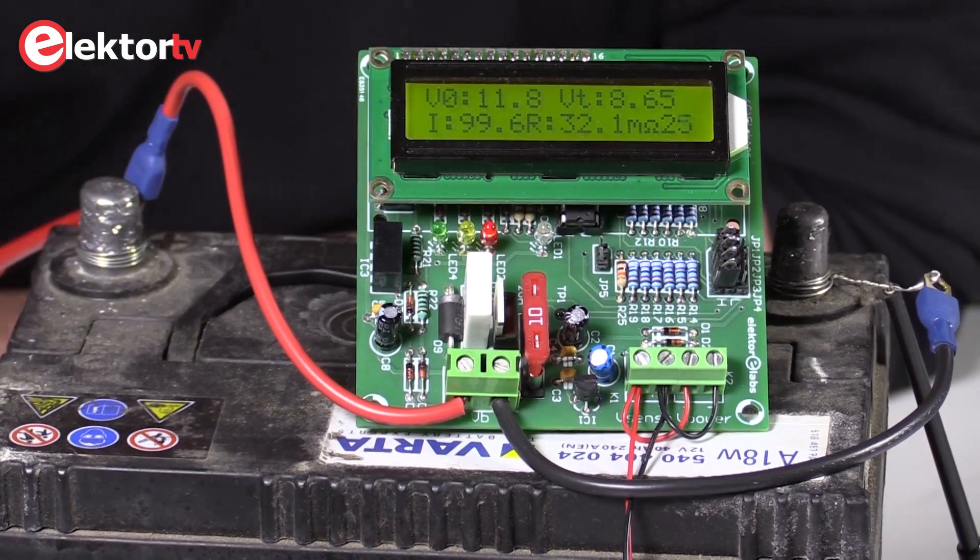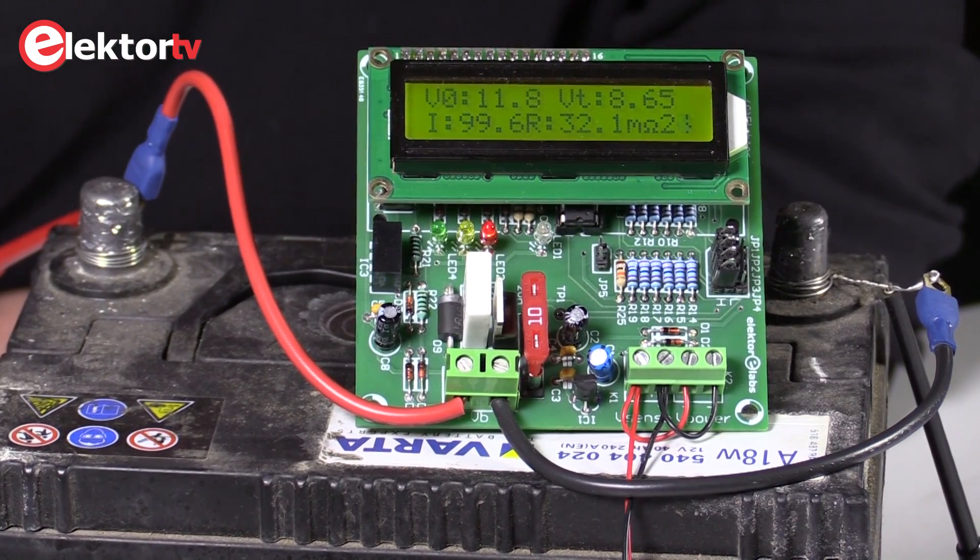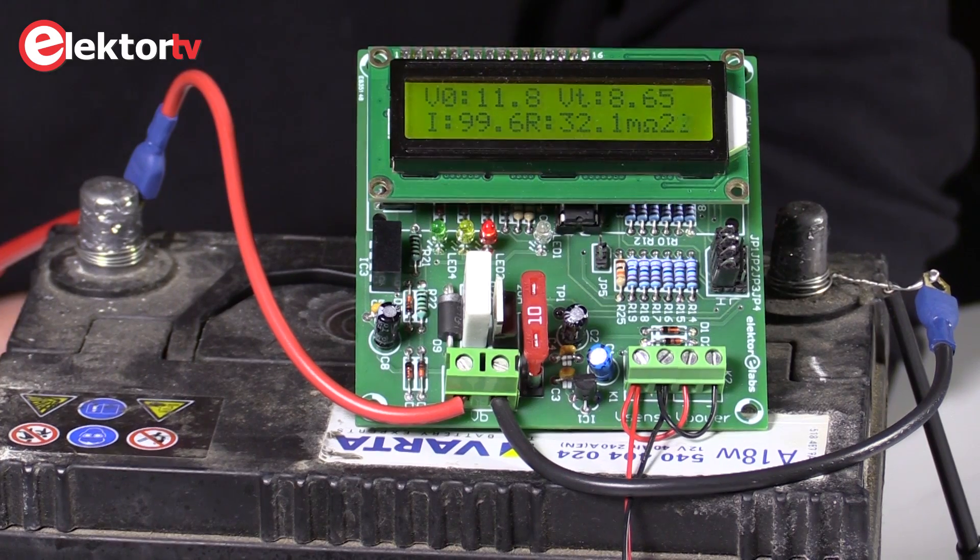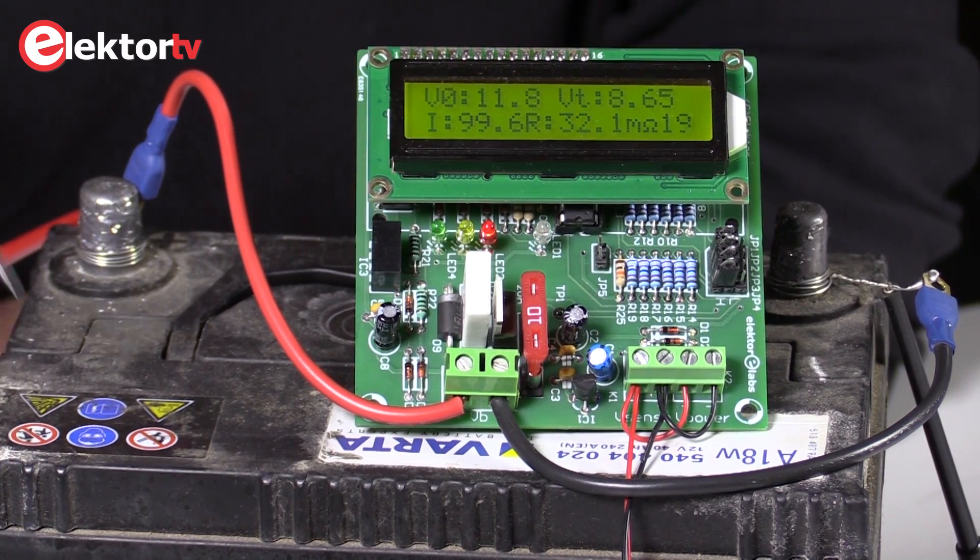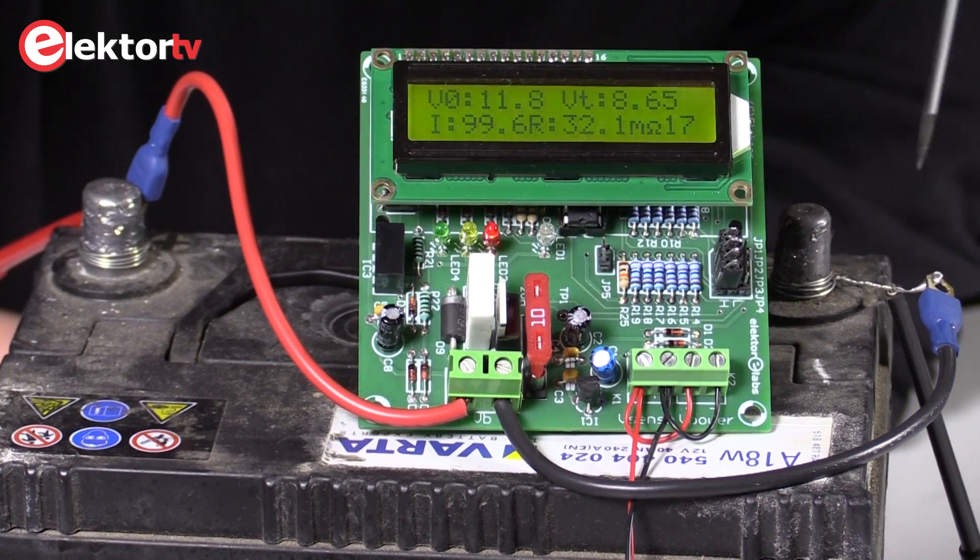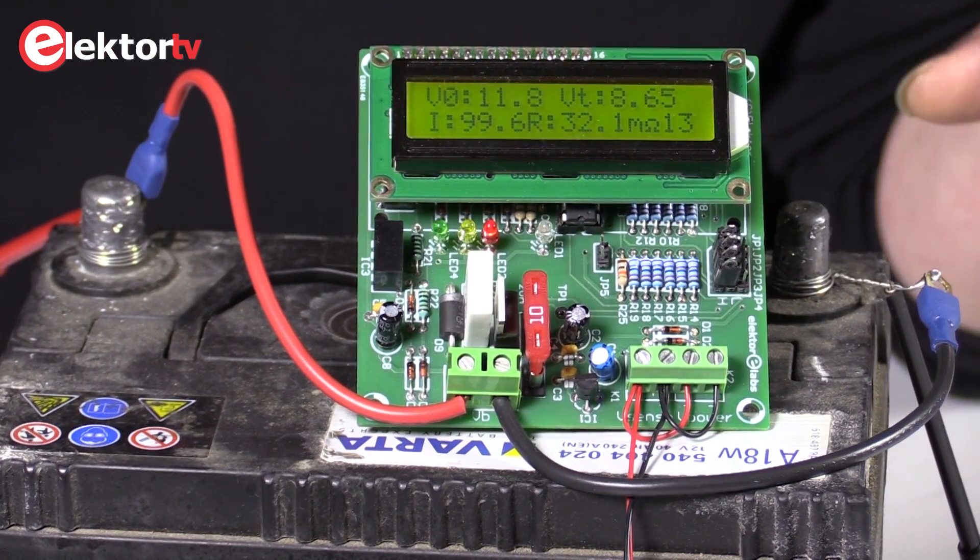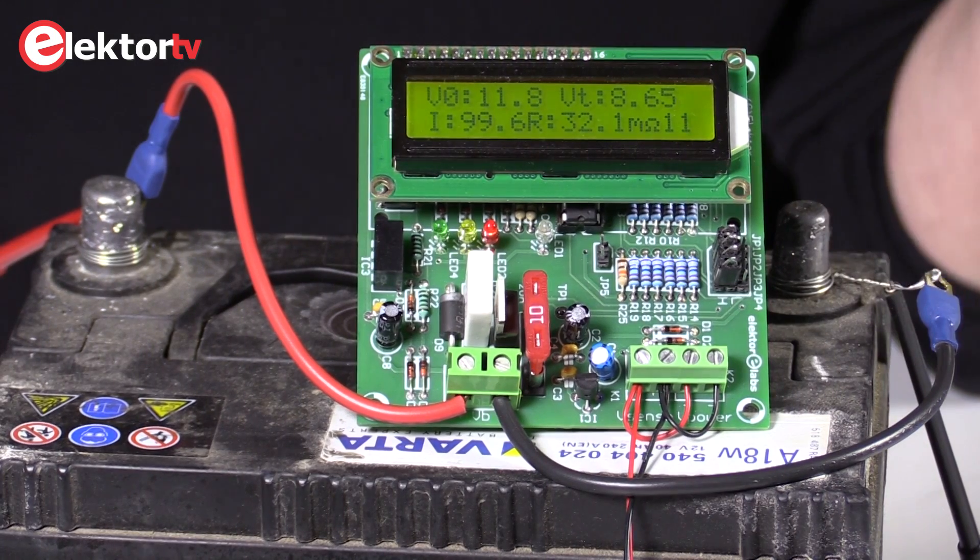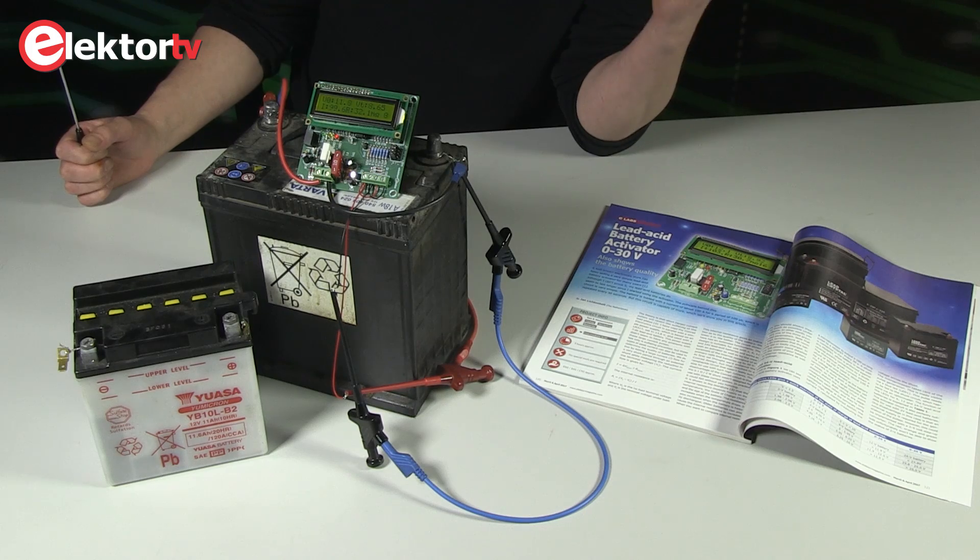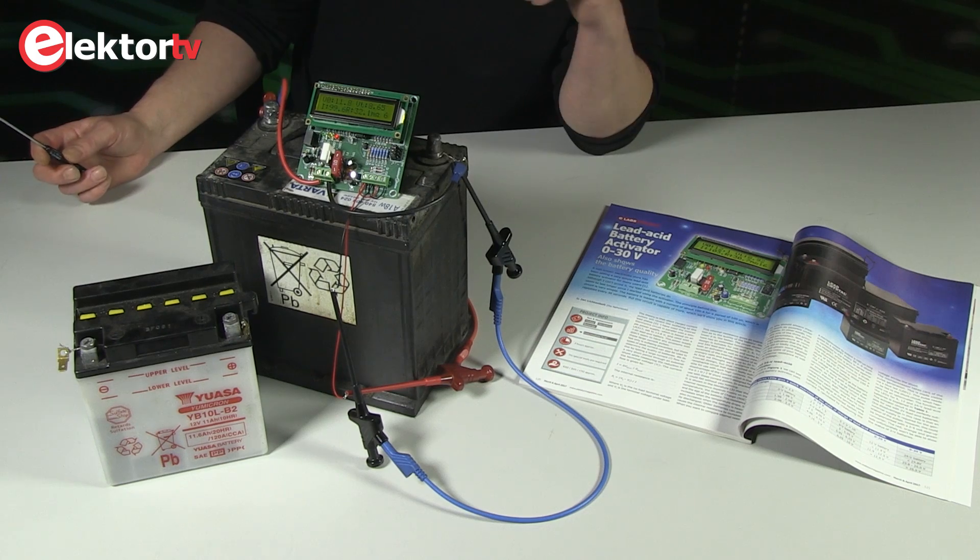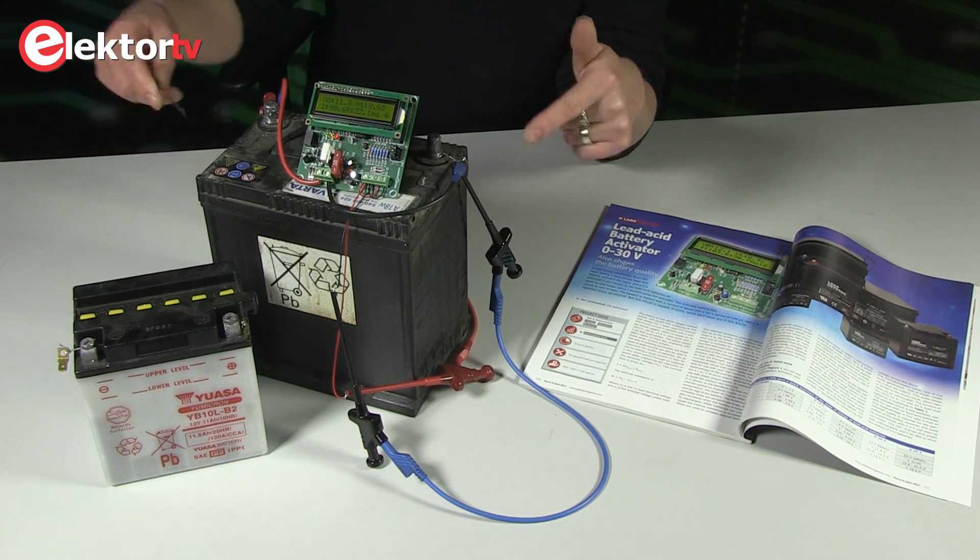Here you see the activator connected to battery. You see the wires here that are used for a shunt circuit to take short current pulses of about 100 ampere from this battery.